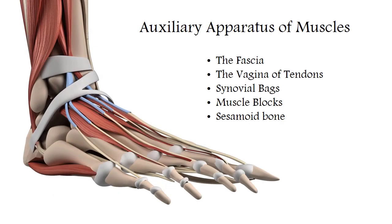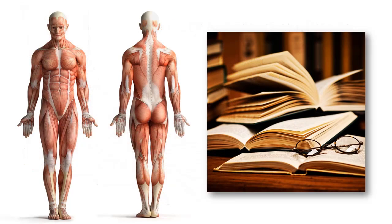Muscles perform all their functions with the help of various assistants called the auxiliary apparatus of muscles. These include structures that reduce friction, create more favorable conditions for attaching muscles to bone, and perform other functions. The amount of information associated with muscles is huge, so before starting to study the massage of individual body parts, massage therapists must first learn the basic muscles — at minimum the mandatory minimum for the largest muscles.